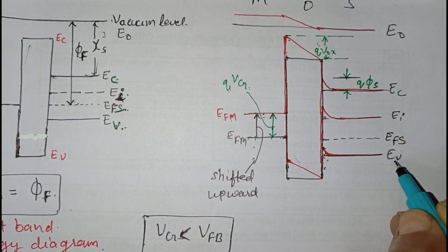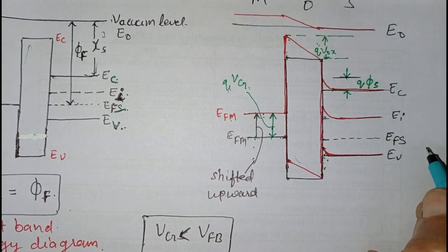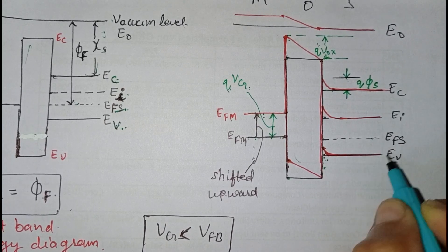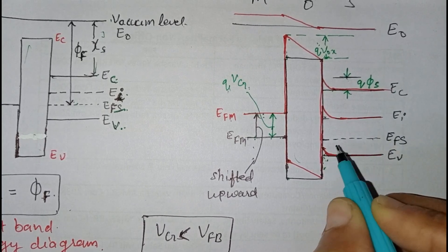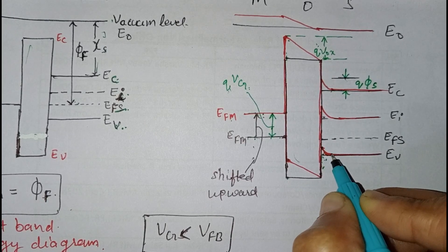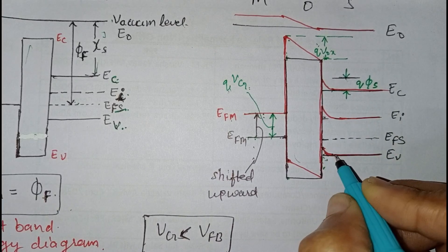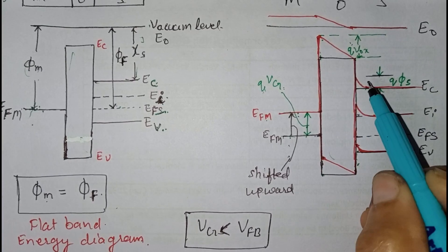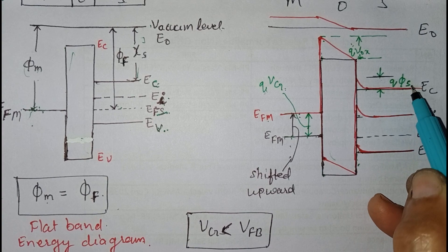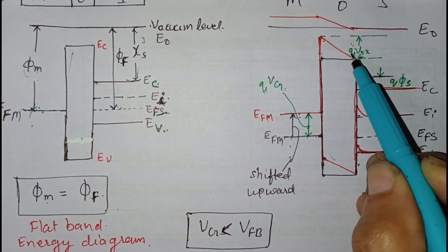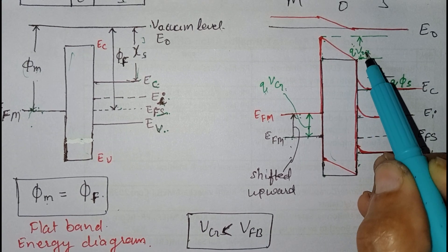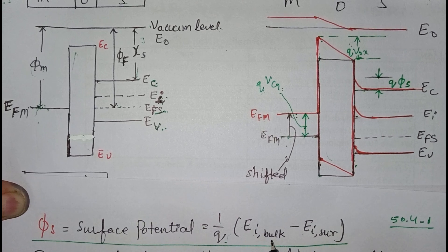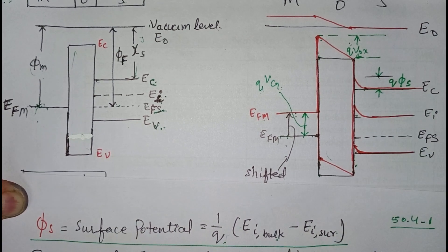In a p-type semiconductor, the Fermi level is near the valence band. Since the substrate side is grounded there is no change there, but due to accumulation of positive holes near the interface, the gap between the Fermi level and the valence band decreases near the interface, causing upward band bending. The conduction band also moves upward. This band bending is given by q times phi_s, where phi_s is the surface potential, and q times V_ox is the voltage drop across the oxide layer. The surface potential is given by one over q times the difference between the intrinsic energy at the bulk and the intrinsic energy at the surface.